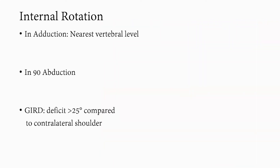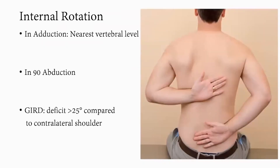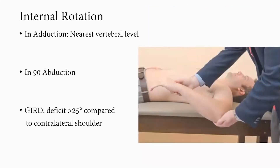Internal rotation can be done in adduction and is measured to the nearest vertebral level. The contralateral scapula is used as a reference — the superior border of the scapula is at T4, the inferior border at T7, and the iliac crest at L4 — serving as a guide to detect the level of internal rotation range. Internal rotation can also be repeated supine with the shoulder abducted to 90 degrees.